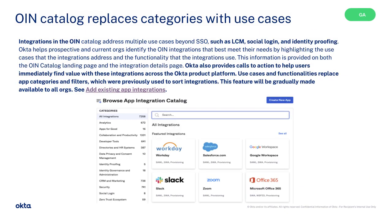Integrations in the OIN catalog address multiple use cases beyond SSO, such as LCM, social login, and identity proofing. This information is provided on both the OIN catalog landing page and the integration details page. Please note, Okta also provides calls to action to help users immediately find value with these integrations across the Okta product platform. Use cases and functionalities replace app categories and filters, which were previously used to sort integrations. This feature will be gradually made available to all organizations.